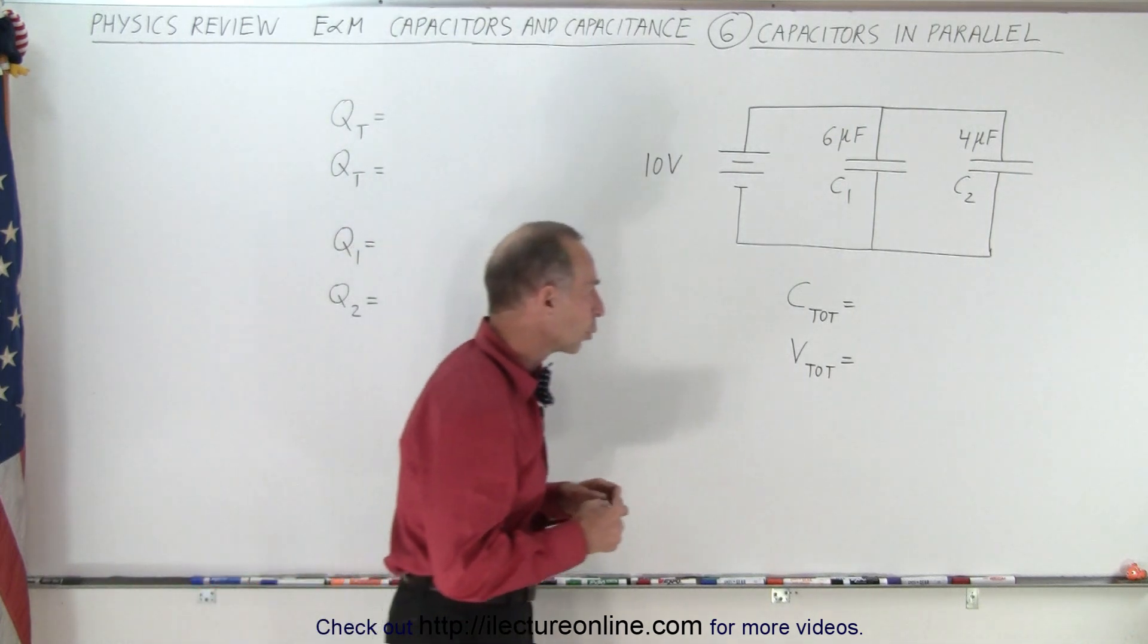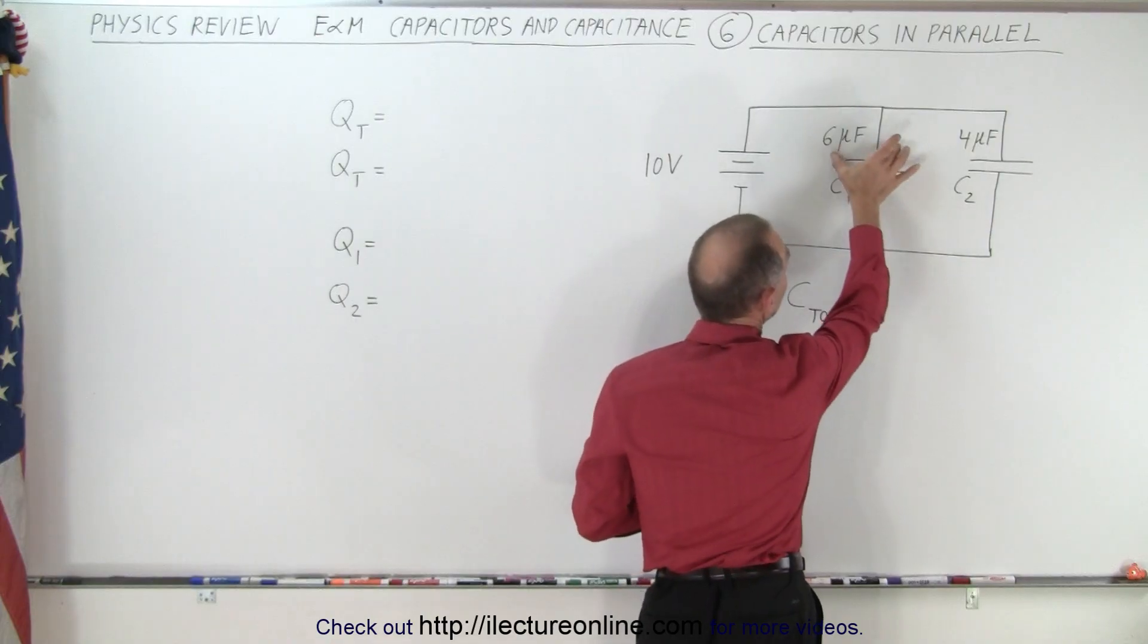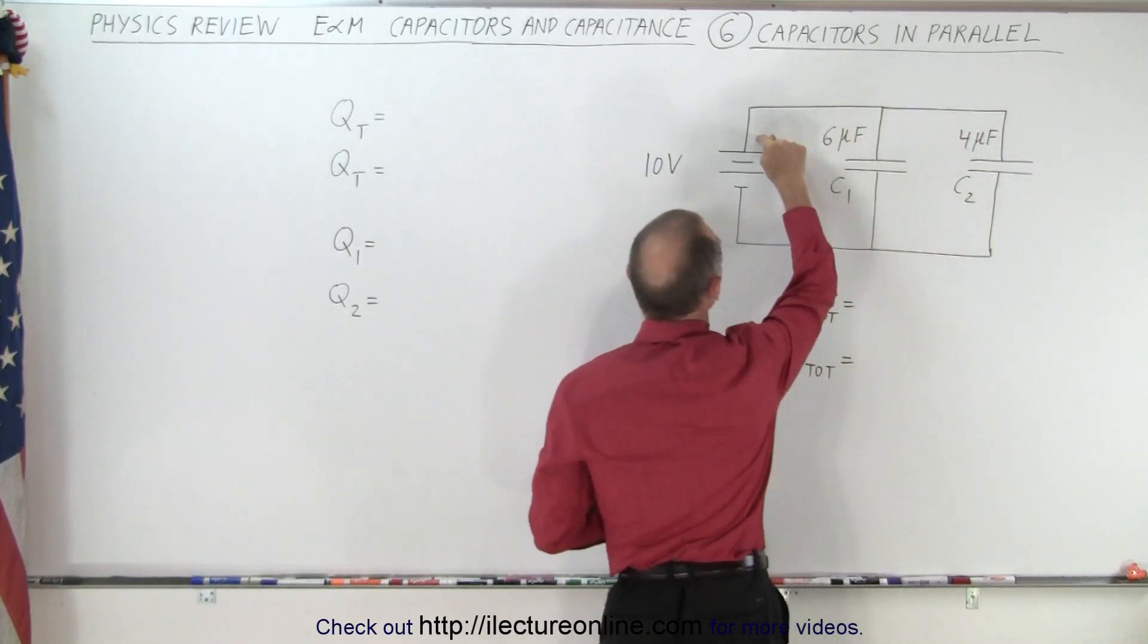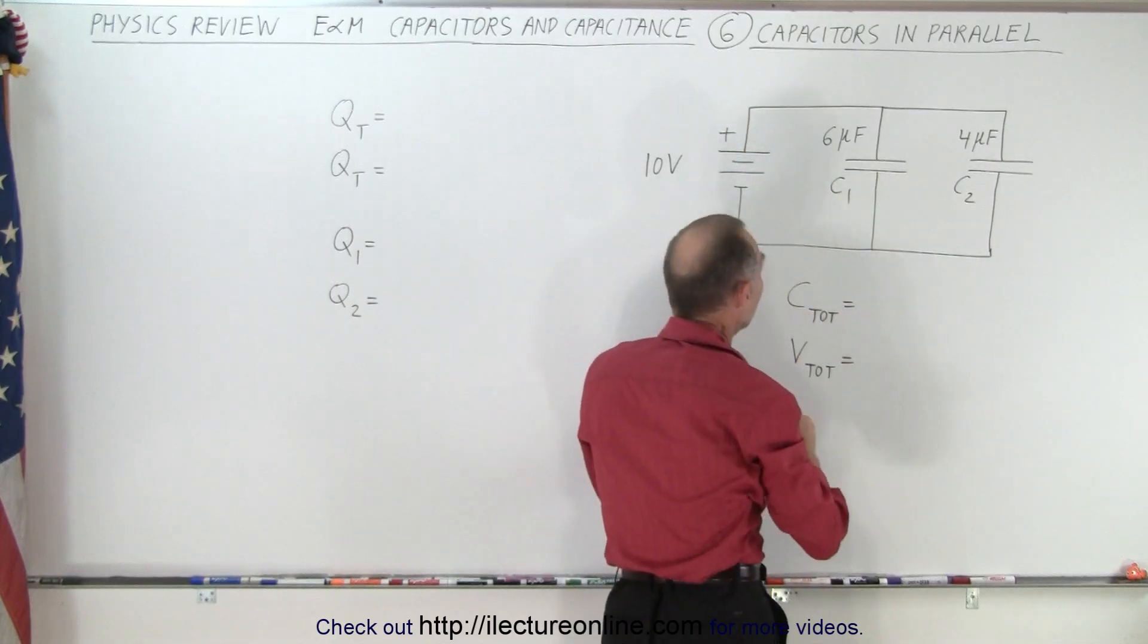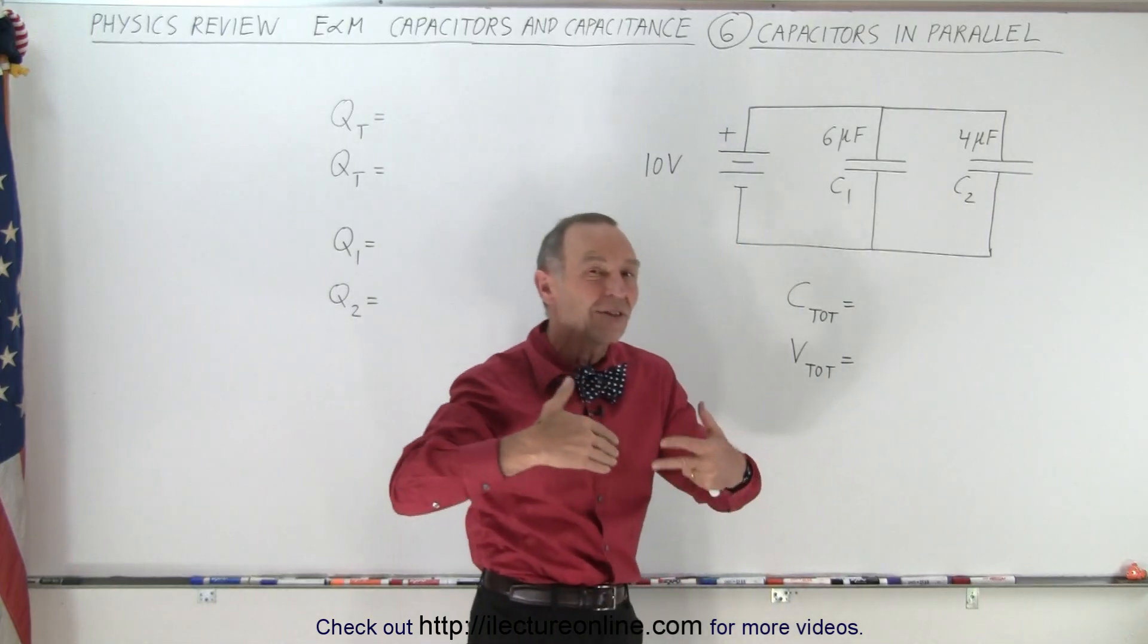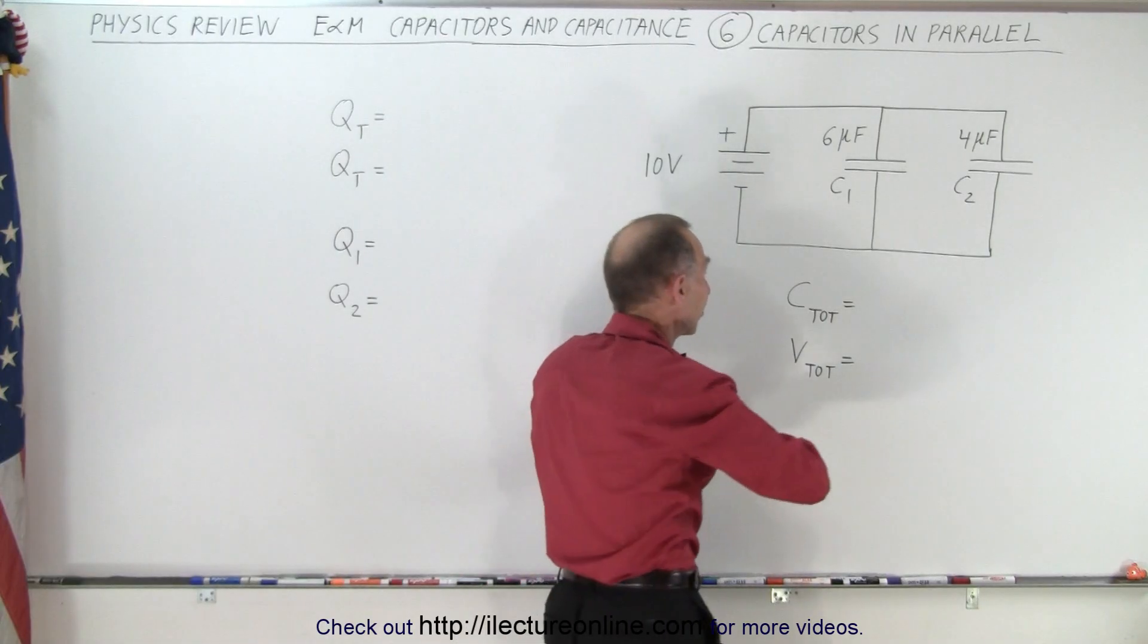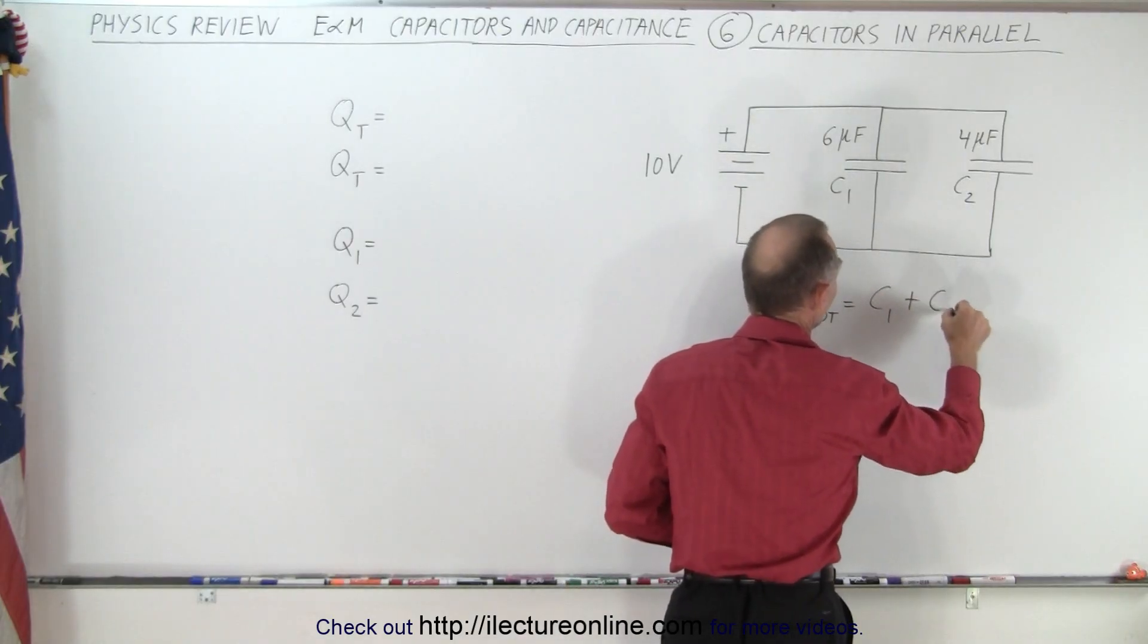So first the total capacitance. And it turns out that when they're in parallel, essentially you're adding the plates. Notice that this plate and this plate are all connected to the same positive side of the battery, and so therefore they both will collect charge on it. And by putting two in parallel, you're essentially just increasing the size of the plate by adding the two together. So the total capacitance is simply the sum of the two. It'll be C1 plus C2.